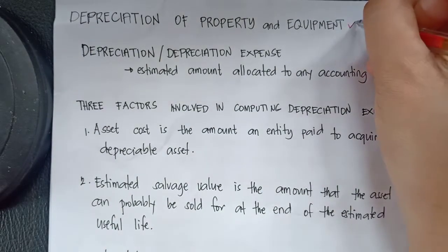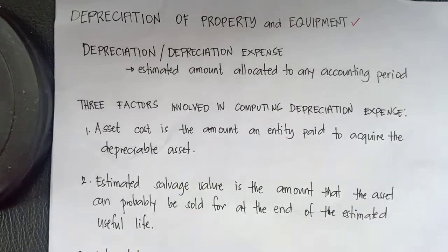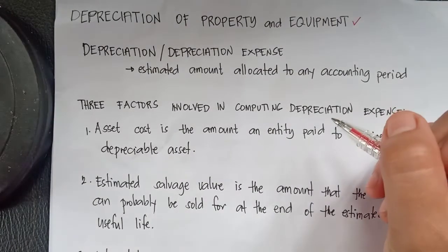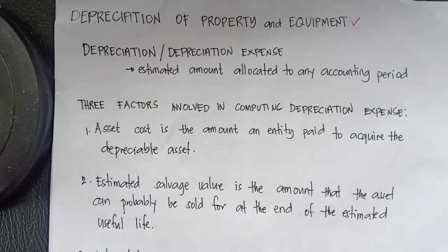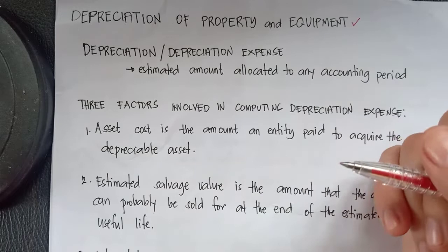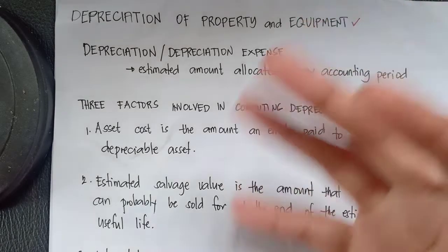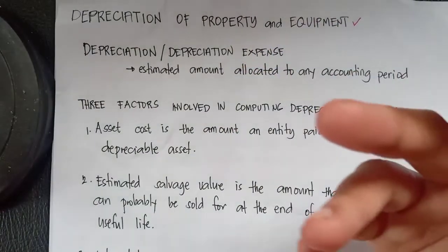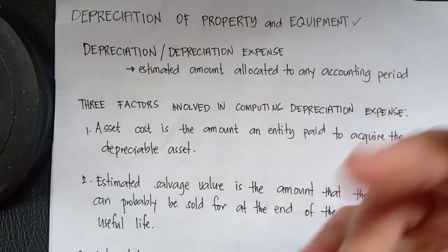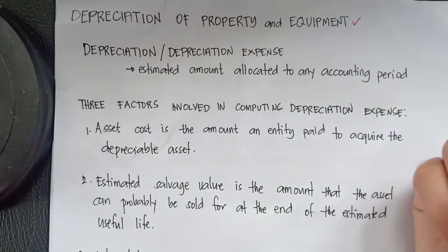So class, in today's discussion, we will talk about the depreciation of property and equipment. When an entity acquires long-lived assets such as buildings, service vehicles, computers, or office furniture, it is basically buying or preparing for the usefulness of that asset. These assets will help us generate income for the entity. Therefore, a portion of the cost of the assets should be reported as expense in each accounting period.